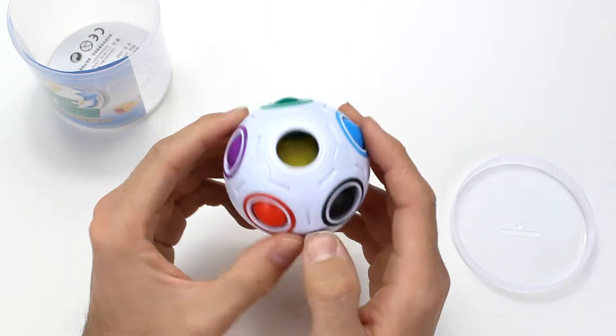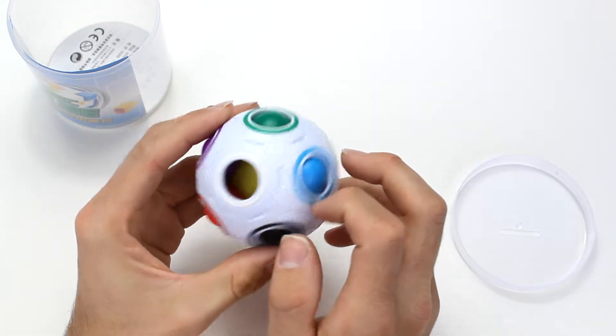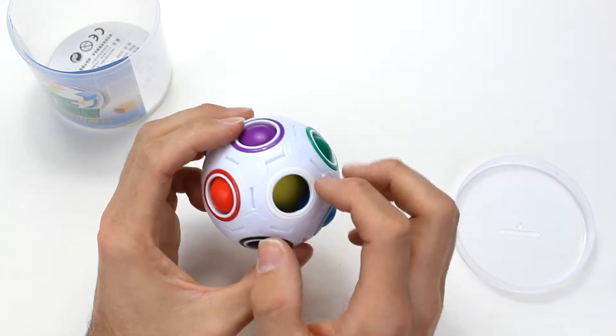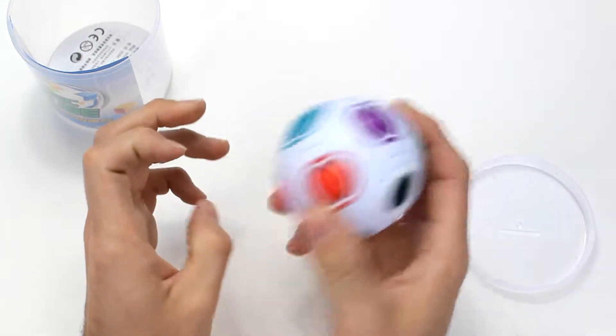You might be able to see in the center there, we've got a kind of foamy padding. What that does is it keeps the balls in their respective ring. They're not floating about and rattling.